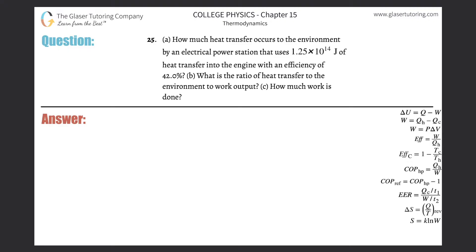Number 25 letter a: how much heat transfer occurs to the environment by an electrical power station that uses 1.25 times 10 to the 14 joules of heat transfer into the engine with an efficiency of 42 percent? Whenever you see heat transfer occurs to the environment and you're talking about an engine, they're asking you to calculate Q sub c, the heat of the cold reservoir. This is the amount of heat transferred into the engine, that's the heat of the hot reservoir.